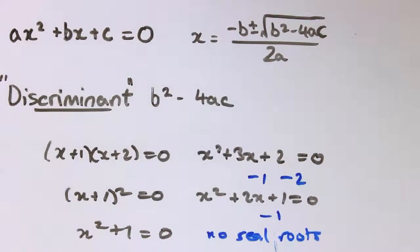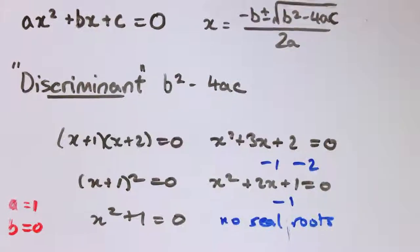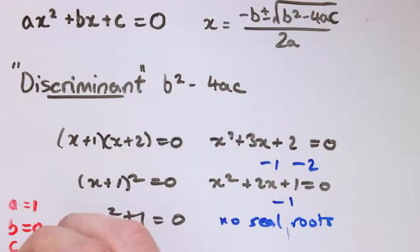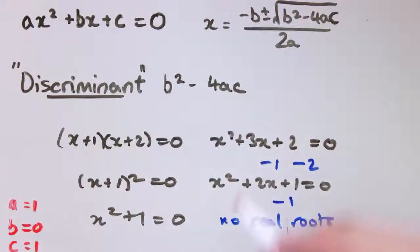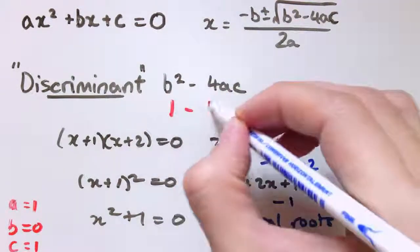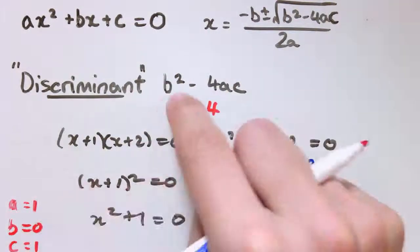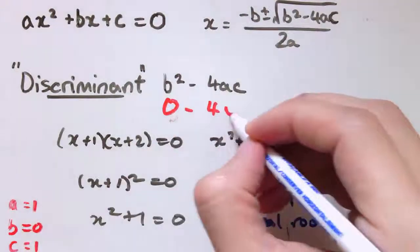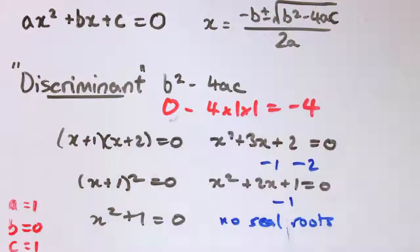So for this third case here, x squared plus 1 equals 0, we've got in this quadratic formula, we've got a is 1, b is 0 because there's no x term, and c is equal to 1. So if I put that in the discriminant here, I would get b squared, that's 0, minus 4 times 1 times 1, so that would be minus 4.